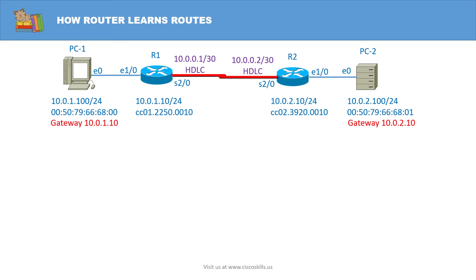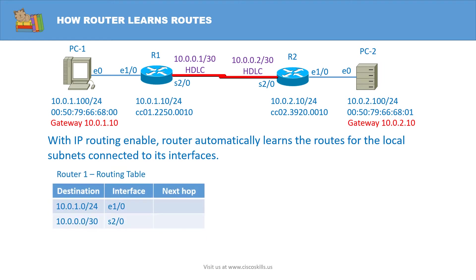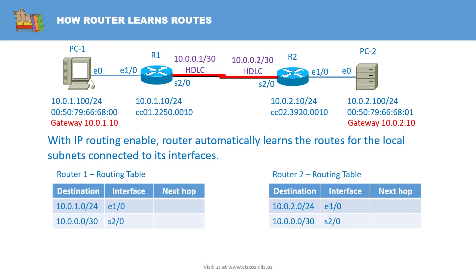Let's discuss how routers learn routes. With IP routing enabled, a router automatically learns the routes for the local subnets connected to its interfaces. Here are the routing tables of router 1 and router 2 after learning the local routes.